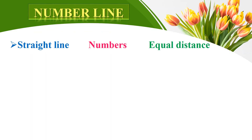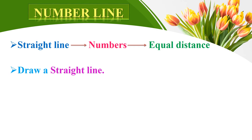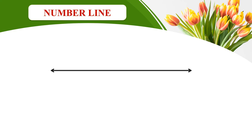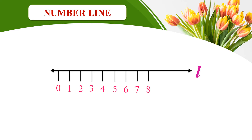Number line — a straight line where we indicate numbers at equal distance. To draw a number line: draw a straight line, divide it into equal parts, and write the numbers from smallest to largest. We draw a line called L, divide it into equal parts, and write the numbers at equal distance: zero, one, two, three, four, five, six, seven, eight, nine, ten.